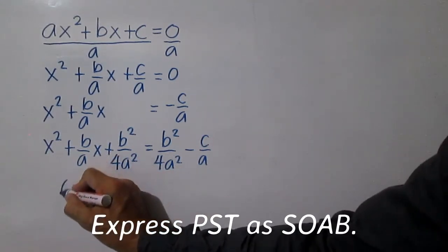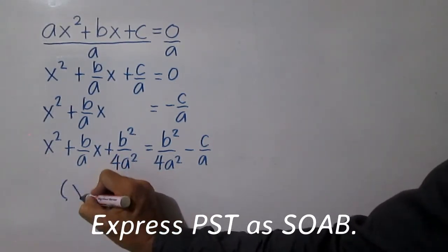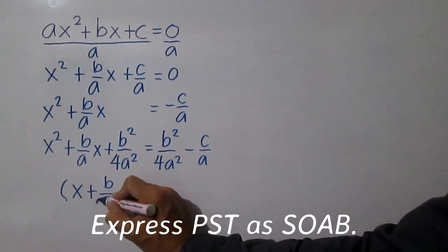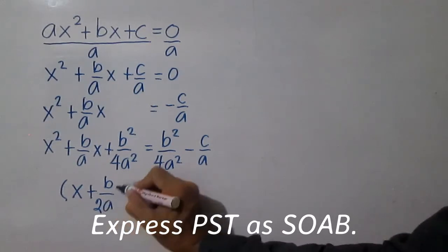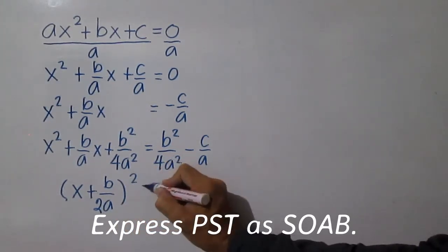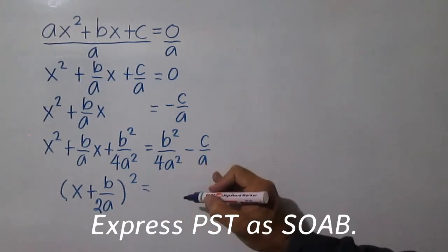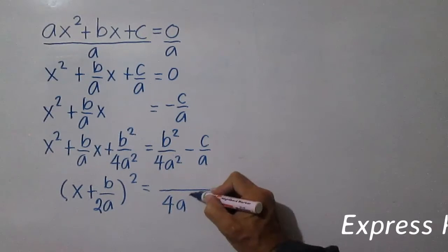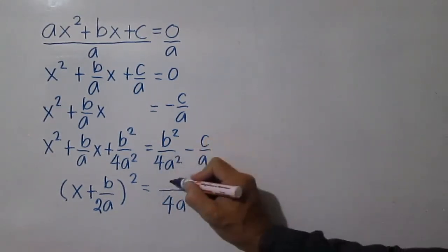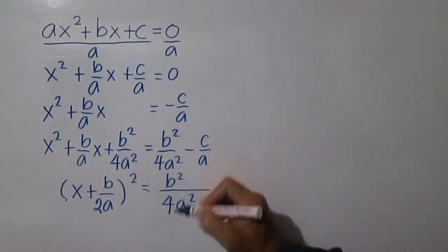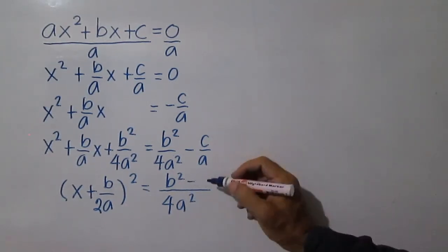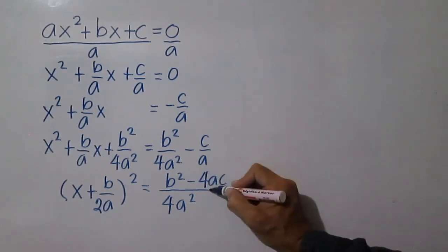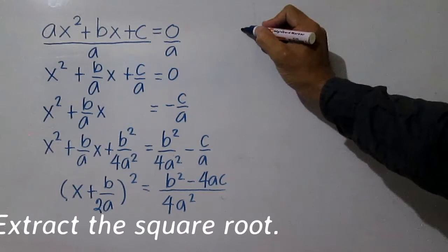Express the left side as the square of a binomial: x plus b over 2a, quantity squared. Then simplify the right side of the equation. The LCD is 4a squared: b squared minus 4a times c, giving b squared minus 4ac over 4a squared.